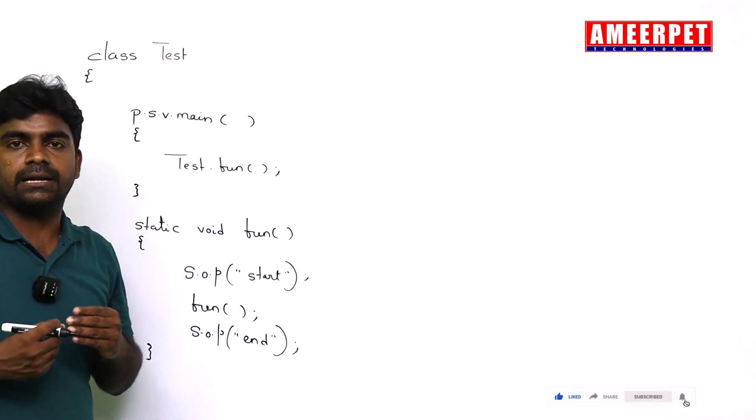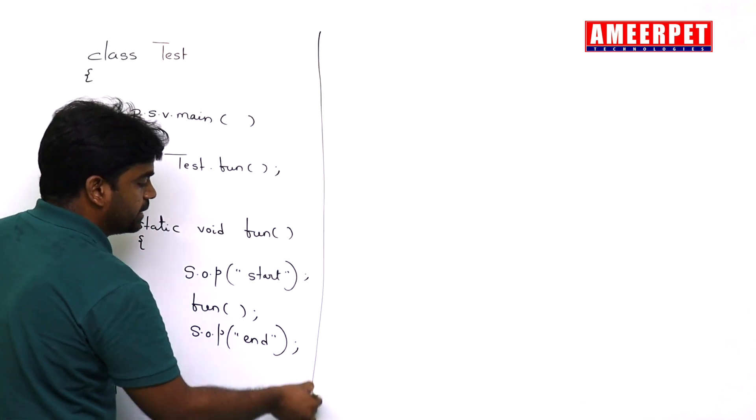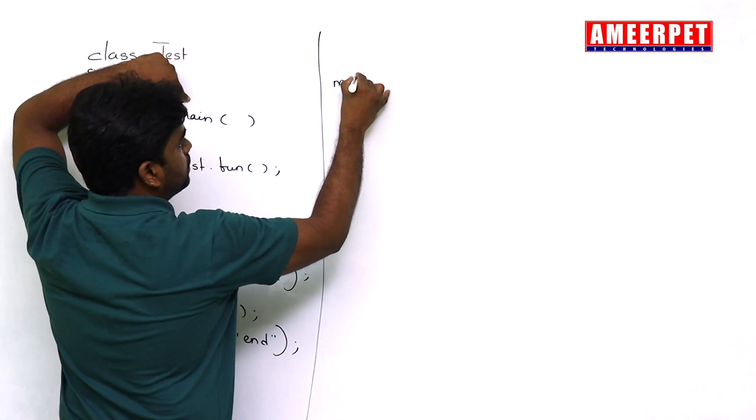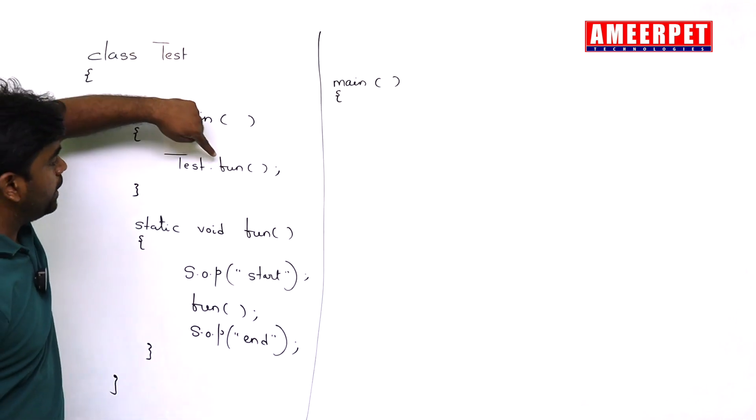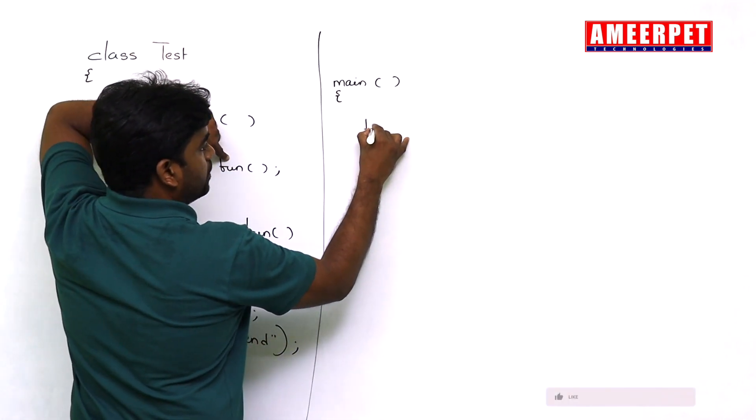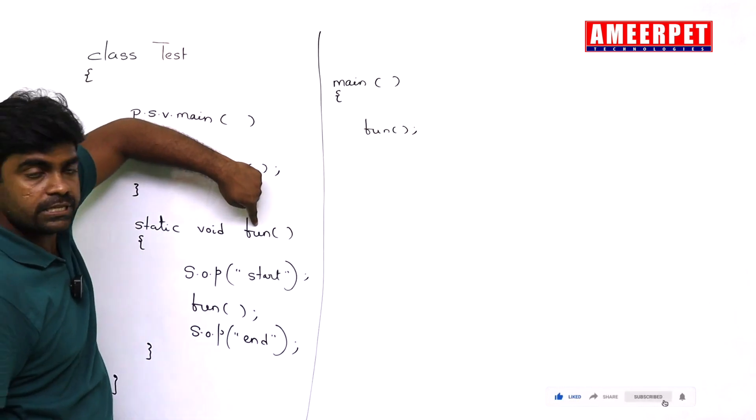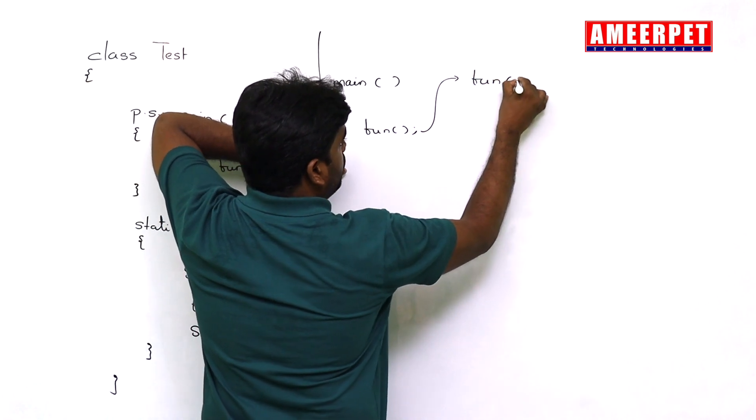The flow we need to understand in recursion concept. I am explaining the flow here. Program execution starts with the main. I am calling this method fun. Memory will be allocated to this fun method. From here, the fun method will call.